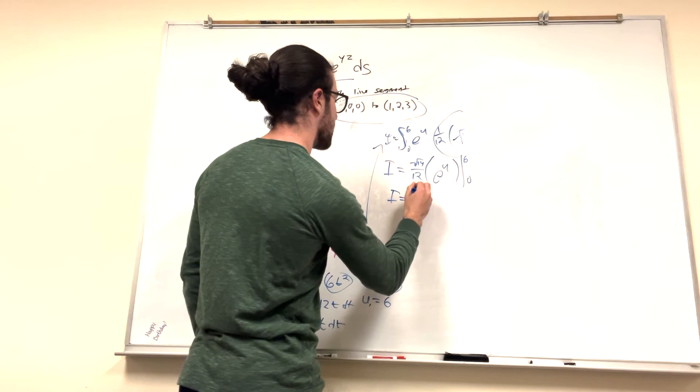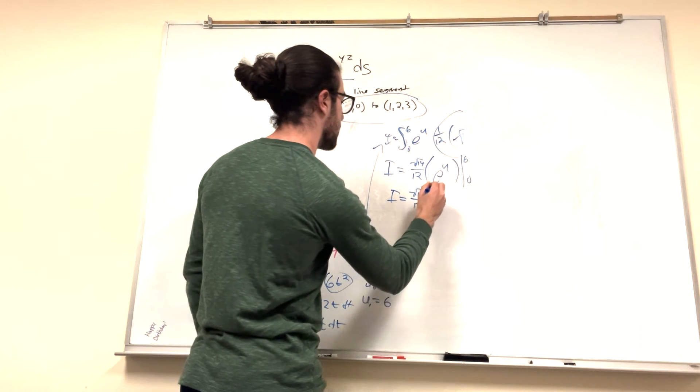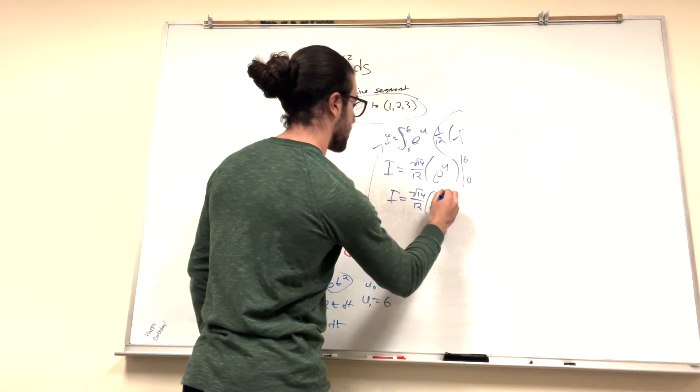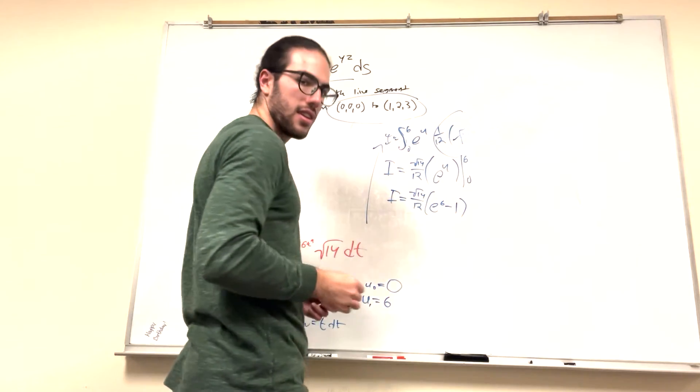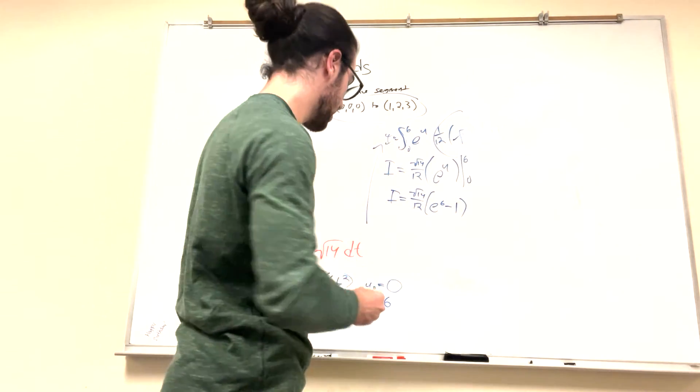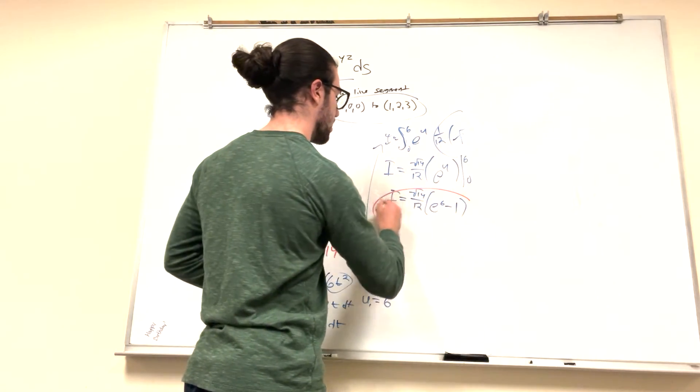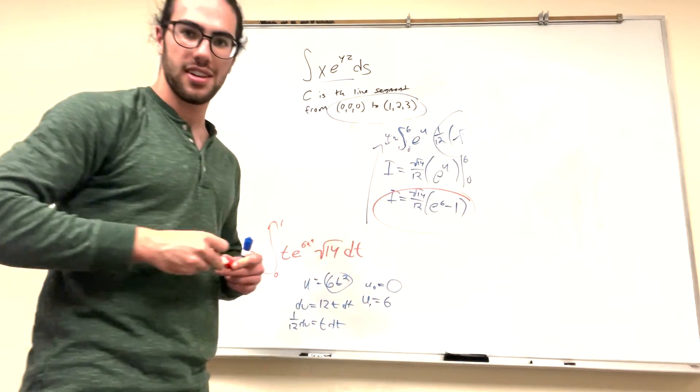And then you can rewrite this, square root of 14 over 12. So it's going to be e to the 6, minus e to the 0, which is 1. And boom. That's it. That's all. Boom. That's our answer right there. Pretty simple question.